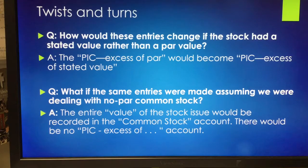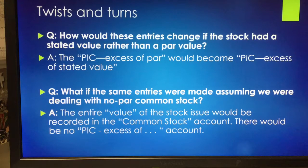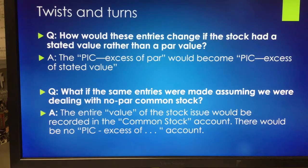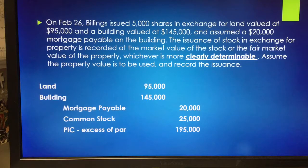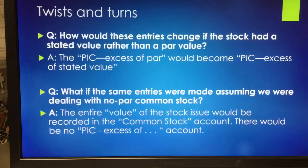Companies can have different classes of stock. You might have stock with different voting rights, like Class A and Class B. If you have different classes, you would have multiple common stock accounts. So whereas we used simply the account 'common stock,' if this were issuance of common stock Class B, the account itself would say 'common stock Class B.' You would have a more descriptive term if you have multiple common stock accounts.